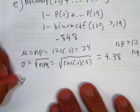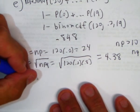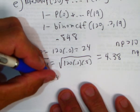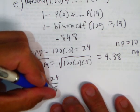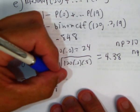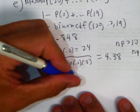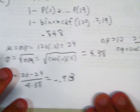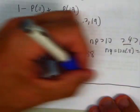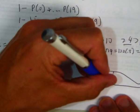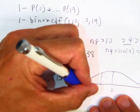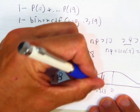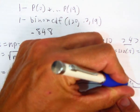So we do a Z-score. And we do 20 minus 24 over 4.38. And we get negative 0.913. And then we do a normal model and negative 0.913. We would shade to the right, because it's at least.